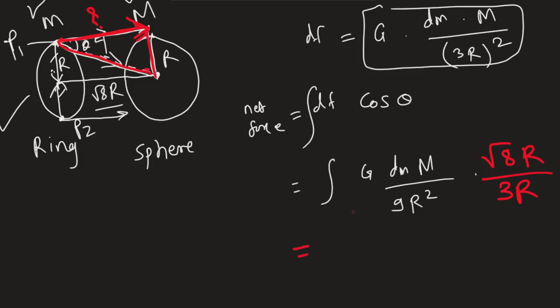It is going to be equal to, and the integration will start from 0 to m. So r r will cancel out over here.